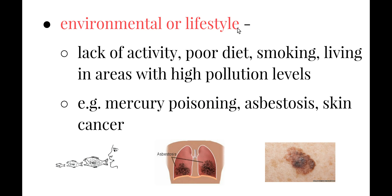Another type of non-infectious disease is environmental or lifestyle disease. These can come about from things like lack of activity, having a poor diet, whether you smoke, drink alcohol, or live in areas with high pollution levels. The environmental side relates to where you live, and lifestyle relates to how you carry out your daily activities. Examples include mercury poisoning from consuming fish that lived in water with high mercury levels, asbestosis where exposure to asbestos fibres gets into your lungs and causes great difficulty breathing, and skin cancer, a lifestyle disease where time in the sun causes radiation-induced mutations in skin cells.